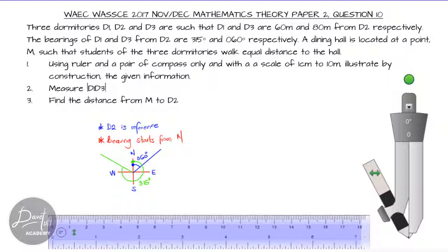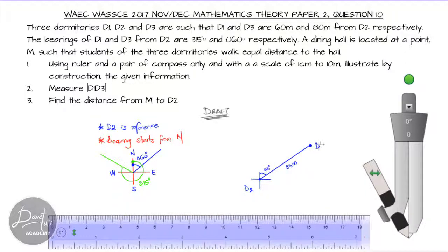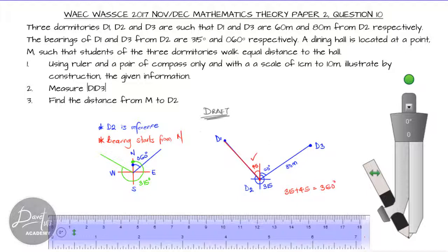We want to have a draft of what our diagram is going to look like. D2 is our point of reference with the cardinal point. We measure 60 degrees from D2 to D3 at 80 meters, and 315 degrees from D2 to D1 at 60 meters. Since 315 is in the fourth quadrant, we can get it by taking 360 minus 45, so 45 degrees to the left of north gives us 315 degrees.